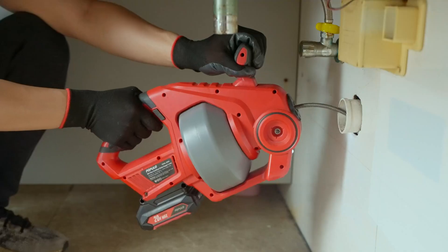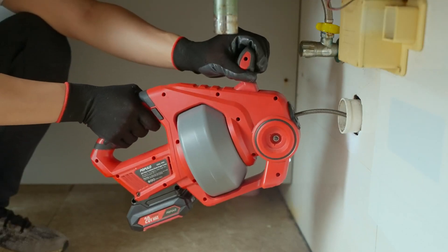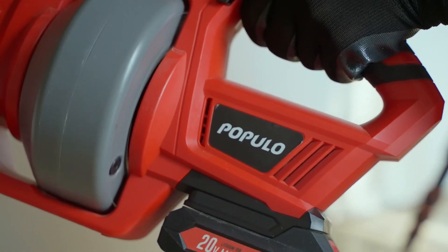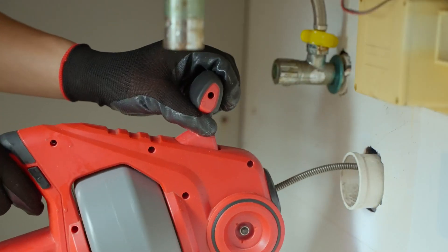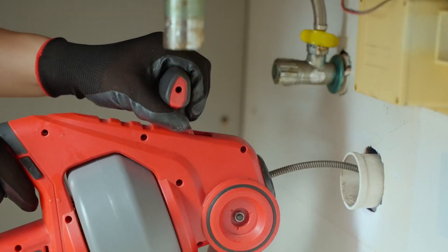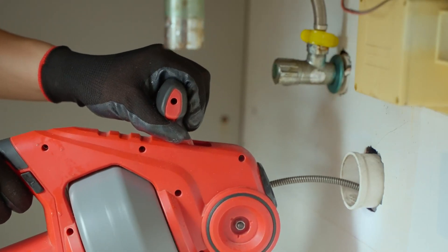Hold the drain auger within 4 inches of the drain or overflow, then turn on the switch. After feeding about 6 inches of cable into the drain, you may begin advancing the cable using the switch trigger or continue advancing it manually.